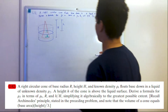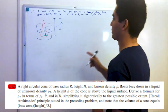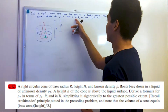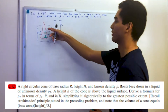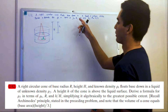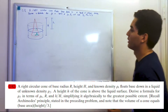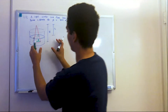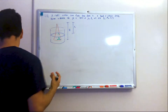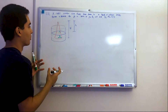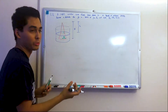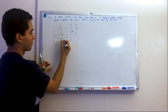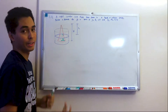A right circular cone floats base down in a liquid of unknown density. Derive a formula for rho of the fluid in terms of the density of the cone, the radius, and height over height. I drew the image beforehand. I'm calling the cone radius big R and the height of the cone big H.